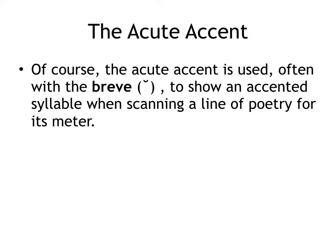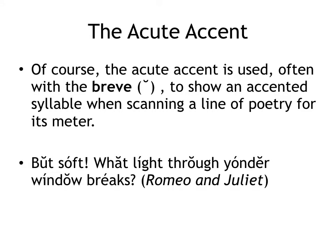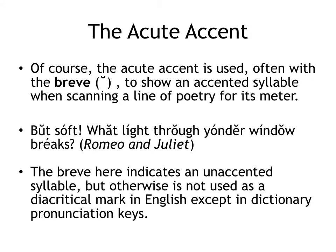You may recall from English classes where you had to scan poems that the acute accent is used often with the breve to show an accented syllable when scanning a line of poetry for its meter. Here's an example from Romeo and Juliet. You write the breve — sometimes called a truncated U for unaccented syllable — and then the acute accent for the accented syllable. So it's 'But soft, what light through yonder window breaks.' That does show us the way the line would be scanned in poetry, and it tells us it is iambic pentameter.